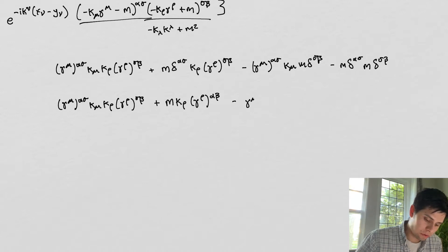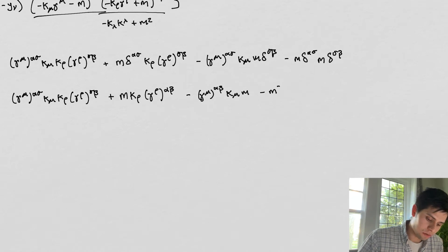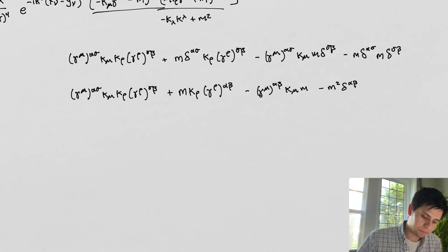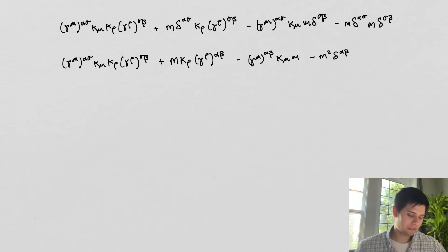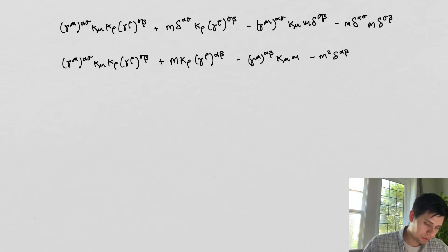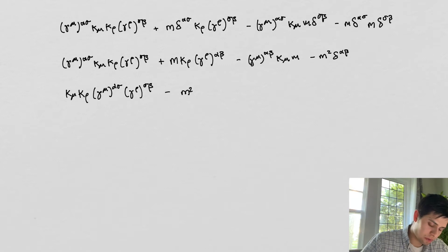That gives us gamma^mu_{alpha beta} times k_mu m, and then we're going to have minus m squared delta_{alpha beta}. So getting a little shorter, which is nice. Next we're going to rearrange a few things: k_mu k_rho, then gamma^mu_{alpha sigma} gamma^rho_{sigma beta}, and then minus m squared delta_{alpha beta}.